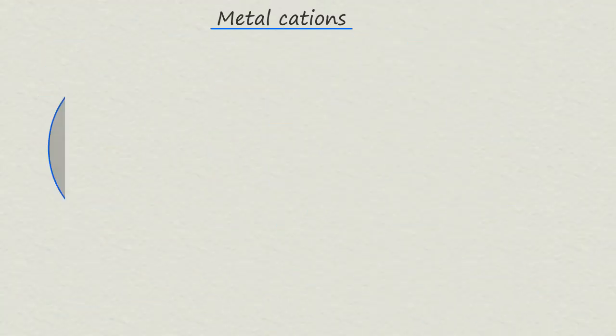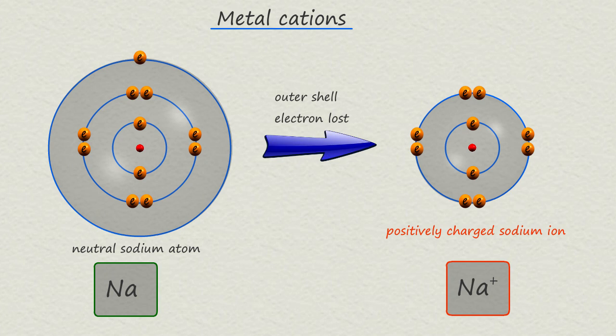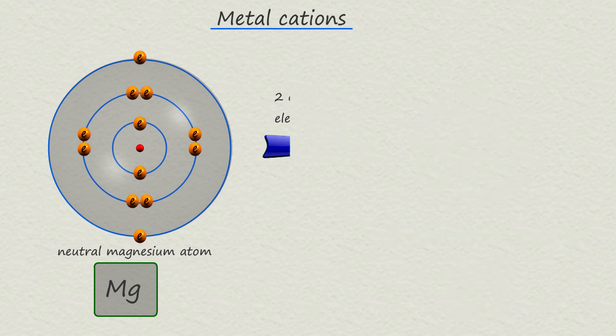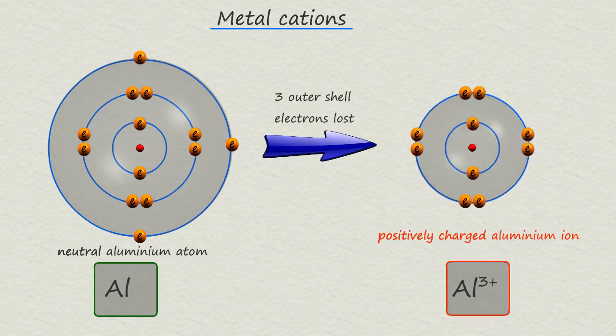A group one metal such as sodium will lose one electron in its outer shell to form a metal ion with a plus one charge. These positively charged metal ions are called cations. A group two metal such as magnesium, which has two electrons in its outer shell, will lose both electrons to form a cation with a plus two charge. A group three metal such as aluminium will lose three electrons to form a cation with a three plus charge.